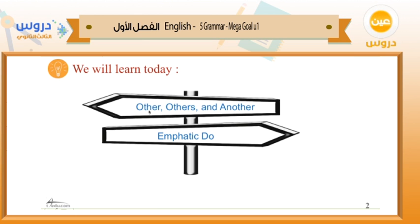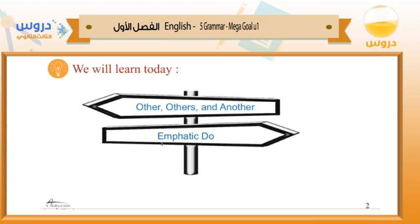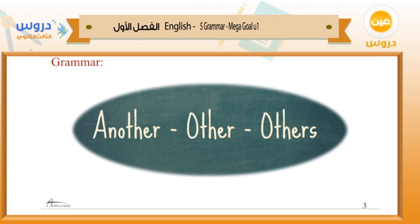We will learn today about 'other,' 'others,' and 'another' — the grammatical structure of other, others, and another — and also emphatic 'do.' What do we mean by emphatic do, and how can we use them? First of all, let's start with 'another,' 'other,' and 'others': how can we use them and what do they mean?